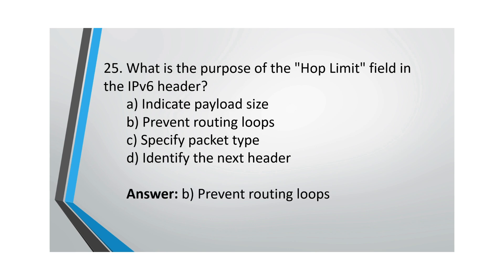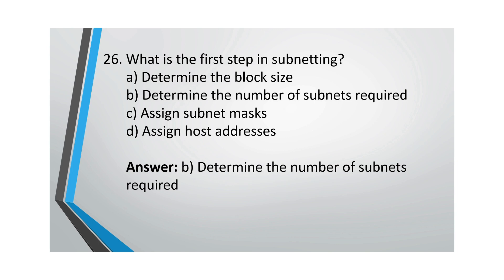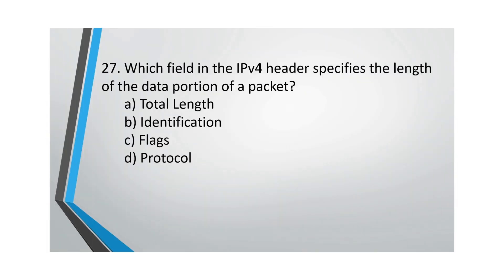Question 25: What is the purpose of the Hop Limit field in IPv6? The correct option is B, to prevent routing loops. Question 26: What is the first step in subnetting? The first step is to determine the number of subnets required. The correct option is B.